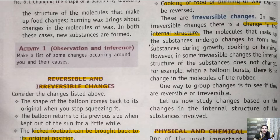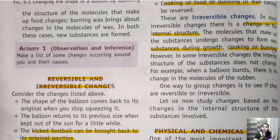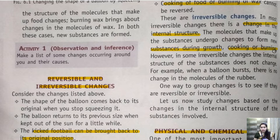The molecules that make up the substance undergo changes to form a new substance during growth, during cooking, during burning. For example, when we are burning a paper, the paper is burnt and converted into ash — it converts into a black form of ash. So there is a change in the internal component of the paper. In irreversible change, the change occurs internally — the internal structure changes, and that is why we cannot regain its original shape or reverse it.